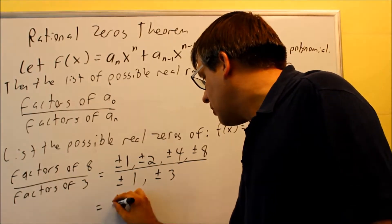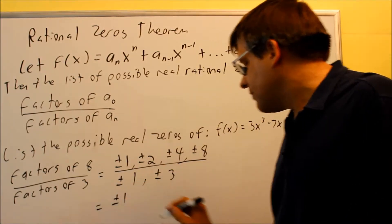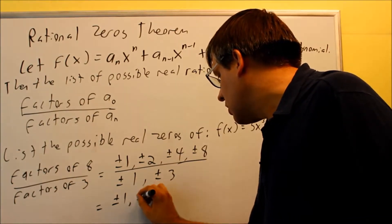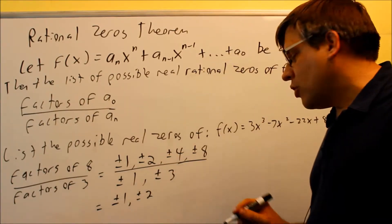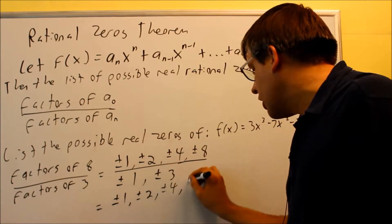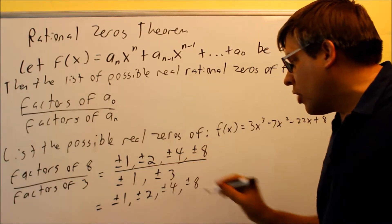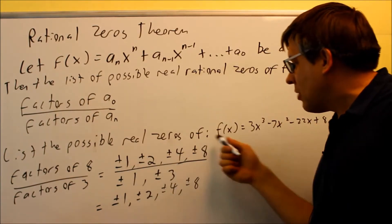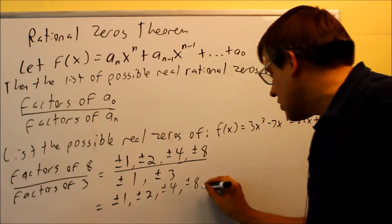Okay, so I have plus or minus. I have 1 over 1. 1 over 1 is just 1. Then I have plus or minus 2 over 1, which is just 2. Then I have 4 over 1, which is 4. And then I have 8 over 1. So you're going to take all of them on top and divide by 1.